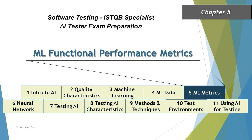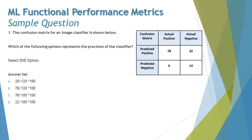The very first question we have is about confusion matrix, which was the very first topic we discussed in our syllabus. Number one: the confusion matrix for an image classifier is shown here in the table, which consists of all the information—actual positive, actual negative, predicted positive, and predicted negative. Which of the following options represents the precision of the classifier?